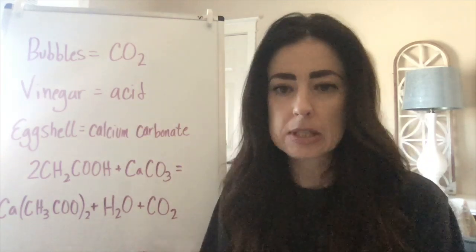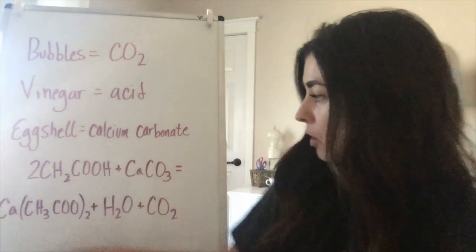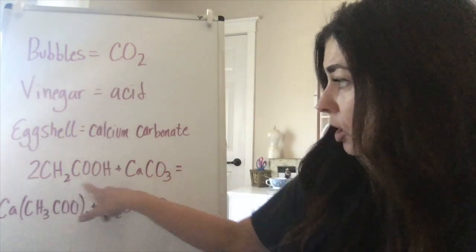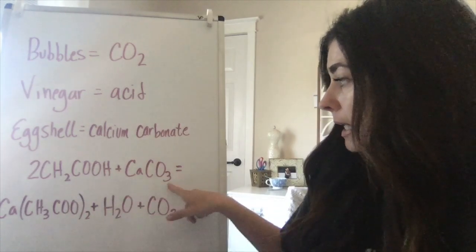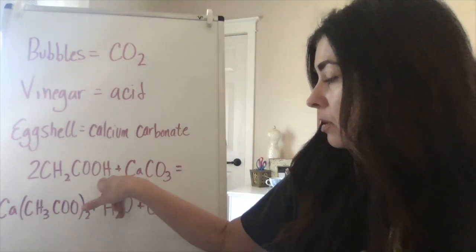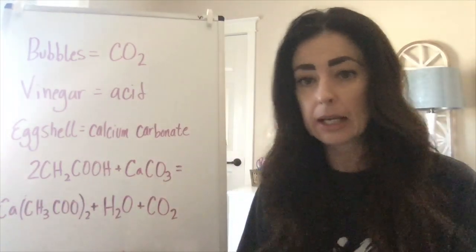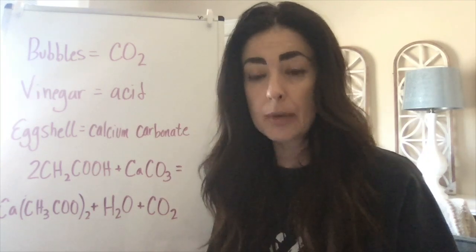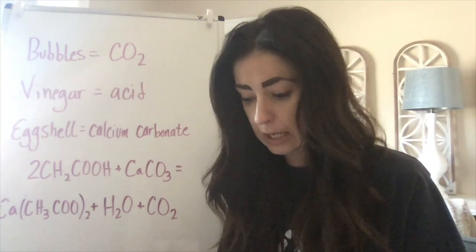The water is just mixed in with the vinegar. So this is the chemical equation: you have the vinegar, which is the acid, and then the calcium carbonate, and when you put those two things together, this is what happens. You'll learn a ton more about this when you get into high school or college chemistry and learn how and why these reactions happen.